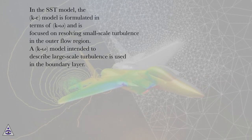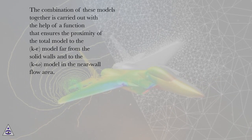In the SST model, the k-epsilon model is formulated in terms of k-omega and is focused on resolving small-scale turbulence in the outer flow region. A k-omega model intended to describe large-scale turbulence is used in the boundary layer. The combination of these models together is carried out with the help of a function that ensures the proximity of the total model to the k-epsilon model far from the solid walls and to the k-omega model in the near wall flow area.